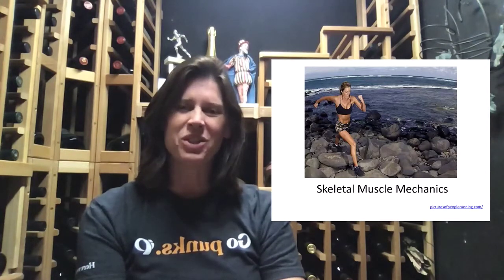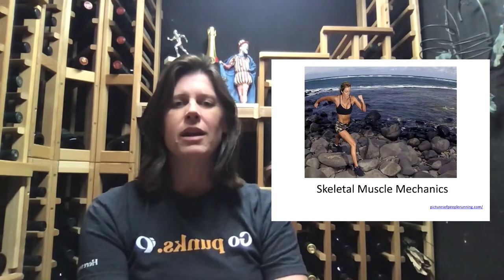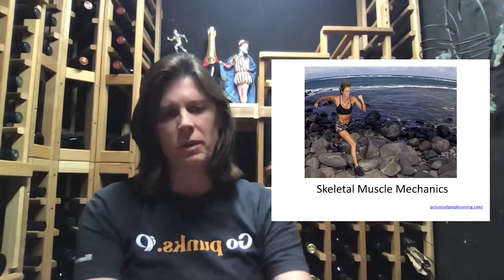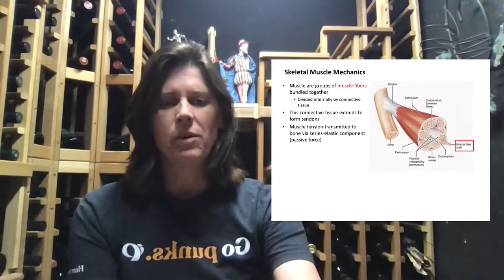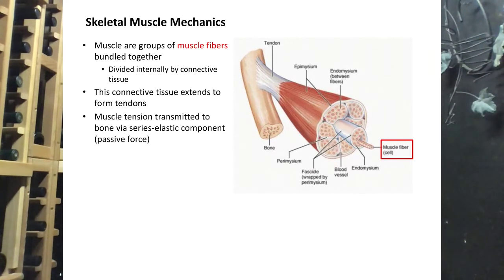In this lecture, we'll be talking about the whole skeletal muscle and how we can control it. We'll see that it's the properties of individual skeletal muscle fibers that help us control the contraction of an entire muscle. Individual muscle fibers group up to form fascicles, and fascicles group up to form the entire muscle.